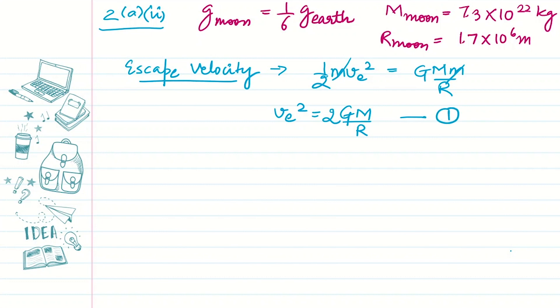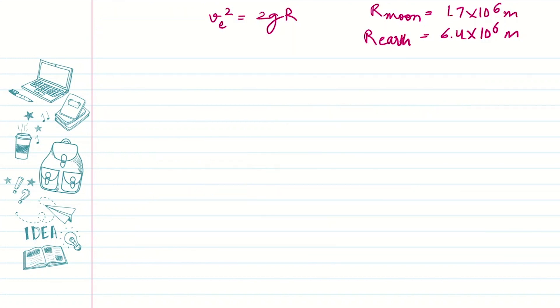Let's say this is equation number one. And we know this acceleration due to gravity is GM over r square. So this is the second equation. Using 2 into 1, we will get v square is equal to twice gr. So this is the relation we are going to use here.